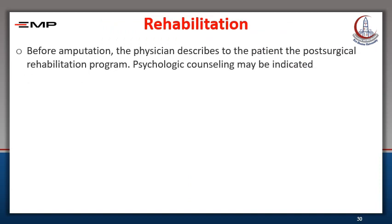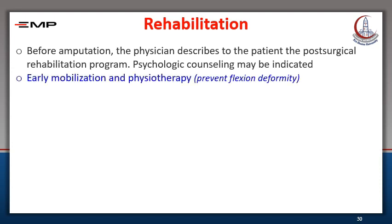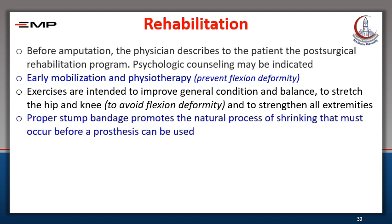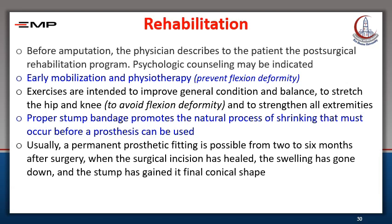Rehabilitation of the amputee is very important. Before amputation, the physician describes the post-surgical rehabilitation program to the patient. Some patients will need psychological counseling. Early mobilization and physiotherapy are important — exercises improve general condition and balance, stretch the hip and knee to avoid flexion deformity, and strengthen all extremities. Proper stump bandaging promotes the natural shrinking process that must occur before a prosthesis can be used.